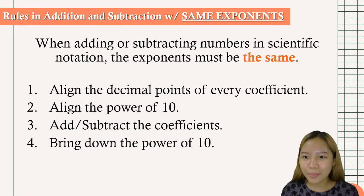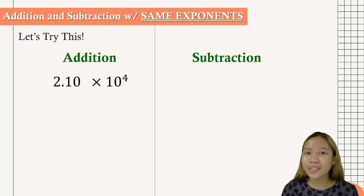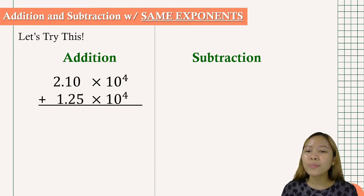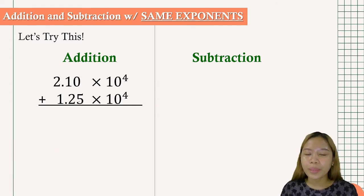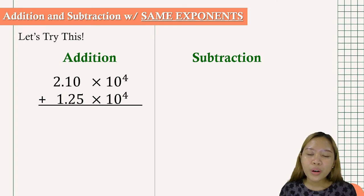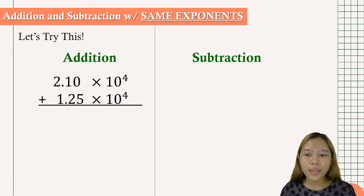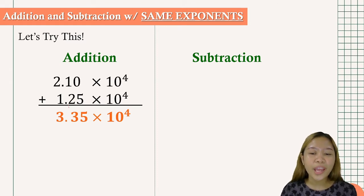So let us have an example. For addition, we have 2.10 times 10 to the 4th plus 1.25 times 10 to the 4th. We will add them: 0 plus 5 equals 5, 1 plus 2 equals 3, and 2 plus 1 equals 3. So our answer is 3.35 times 10 to the 4th.